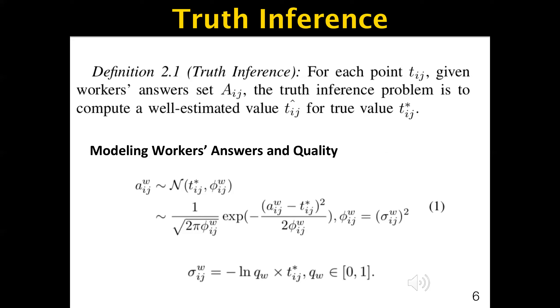Where φ_w is the variance and σ_w is the standard deviation. Generally speaking, if w has good quality, then the variance will be small because the answer is likely to be close to the ground truth t_ij star. Motivated by this, we use q_w to denote the quality of w and -log q_w to denote the ratio. Since -log q_w is a monotonous function, when q_w is close to one, which indicates a high quality worker, the standard deviation σ_w is small because -log q_w is close to zero.